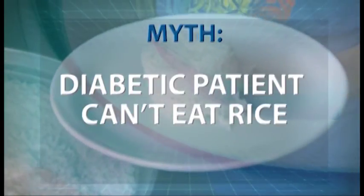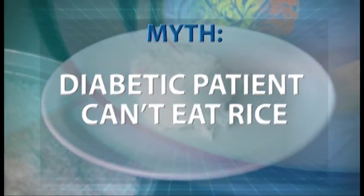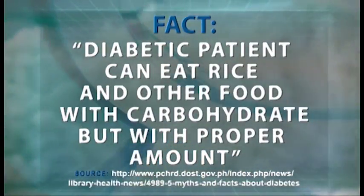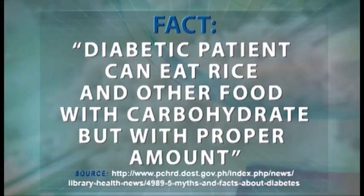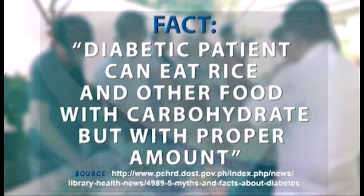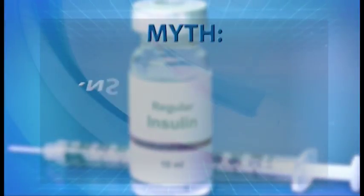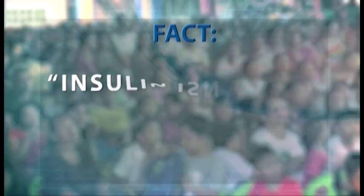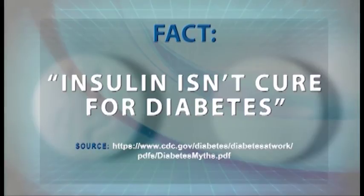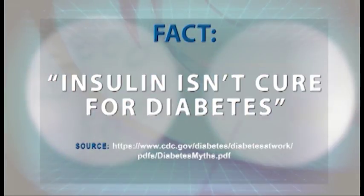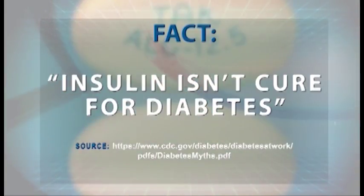Myth: Hindi maaaring kumain ng kanin ang mga diabetic patients. Fact: Lahat ng mga pagkain na may carbohydrate ay pwedeng makaapekto sa diabetes. Maaaring kumain ng kanin pero dapat nasa tamang dami ng kanin o mga pagkain na may carbohydrate. Myth: Ang gamot sa diabetes ay insulin. Fact: Hindi gamot ang insulin sa diabetes. Sa katunayan, walang gamot sa sakit na ito. Subalit may ilang oral medicines na makatutulong sa pagkontrol ng pagtaas ng blood sugar ng isang taong may diabetes.